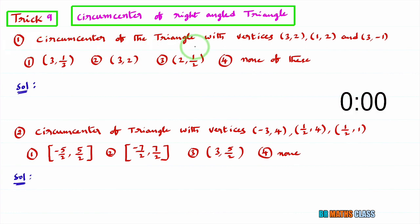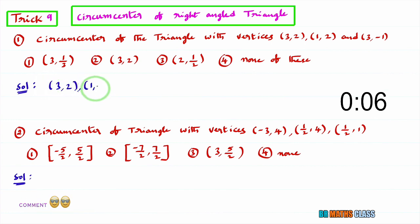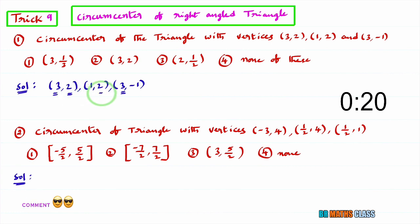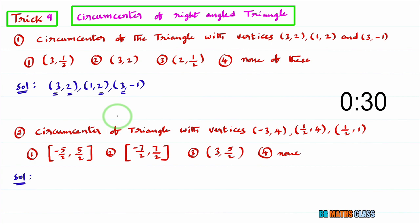Observe this question — circumcenter of a triangle with these three vertices. Consider all the vertices. Any two x-coordinates are equal? Yes, these two x-coordinates are equal. Any two y-coordinates are equal? Yes, these two y-coordinates are equal. In a triangle, when any two x-coordinates and any two y-coordinates are equal, then definitely those three vertices form a right-angled triangle.